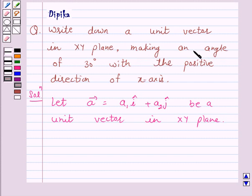this vector is making an angle of 30 degrees with the positive direction of x-axis. That is, a1 equals cos 30 degrees, which equals root 3 over 2.